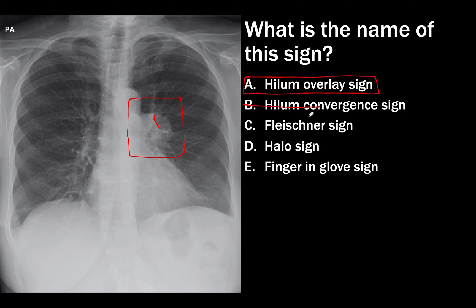The Fleischner sign is due to an enlarged pulmonary artery from a pulmonary embolism, so that's incorrect. A halo sign is really something you see on CT, not on radiographs. The finger-in-glove sign is what you would see in a patient with ABPA, representing mucus plugging — so that's not correct. This is the hilum overlay sign.